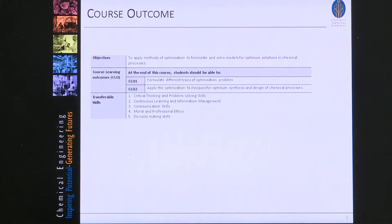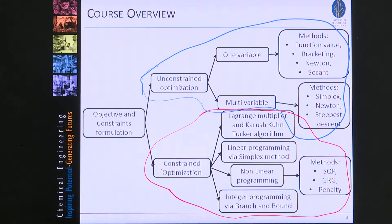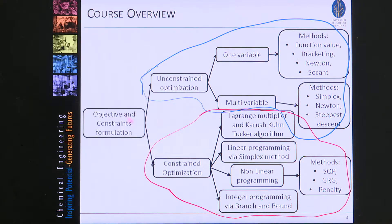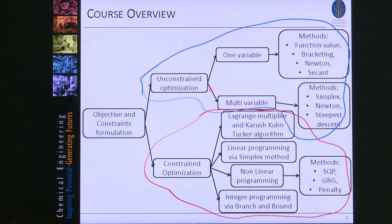These are some transferable skills we would like you to have at the end of the course. I divide the course into two big parts. We will start with the objective and constraint formulation, and then from the constraints we will have an unconstrained optimization part and a constrained optimization part. In each of them we will have one variable with different methods to solve them, and then more than one variable, or multi-variables, with different methods to solve them.